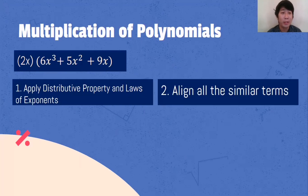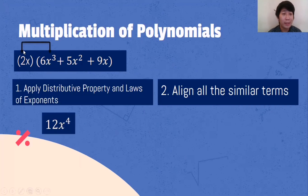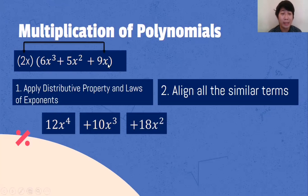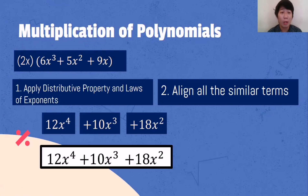Number two, align the similar terms. So we will be distributing 2x to 6x cubed, 2x to 5x squared, and 2x to 9x. So 2x multiplied by 6x cubed: 2 multiplied by 6 is 12, then 1 plus 3 is x raised to 4. Next, 2x multiplied by 5x squared: 2 multiplied by 5 is 10, then 1 plus 2 is x cubed. Next, 2x multiplied by 9x: 2 multiplied by 9 is 18, then 1 plus 1 is x squared. The final answer is 12x raised to 4 plus 10x cubed plus 18x squared.